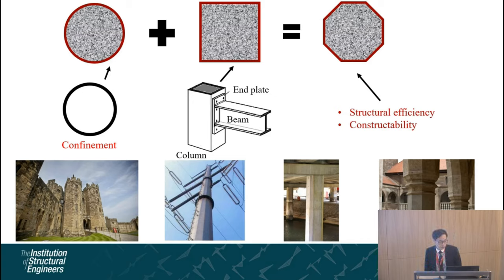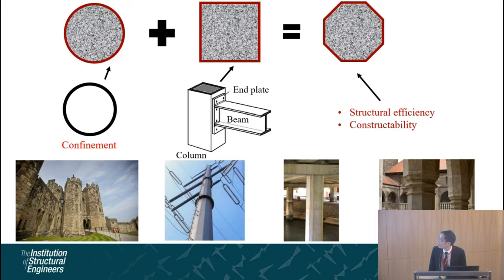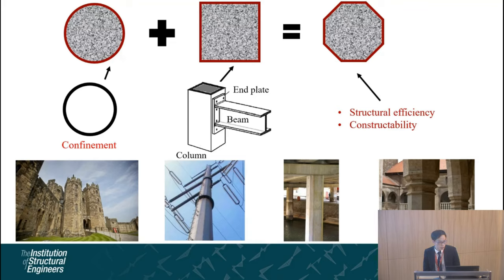For a circular section, because of the uniform curvature, the steel can provide the most efficient confinement from steel to concrete. For the rectangular section, however, because of the flat sides and sharp corners, the confinement effectiveness is not as good, but the flat side can provide more beam-column connection options for engineers, such as using an end-plate with blind bolt connection for beam-column connections.